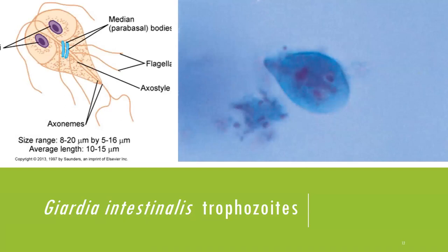Let's start the discussion with Giardia intestinalis, also known as Giardia lamblia and Giardia duodenalis. The trophozoites range from 8–20 micrometers by 5–16 micrometers, with an average length of 10–15 micrometers. The morphological characteristics of the trophozoite resemble an old man's face. It is important not to just remember 'old man's face' — you need to describe what structures correspond to that appearance.